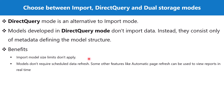Direct Query models also don't require scheduled data refresh. Since data stays at the source, every query hits the source and brings in the latest data, so you are not constrained by the refresh limits of 8 or 48 times per day. There are also certain features like automatic page refresh in Power BI and Power BI service, which can be used to view reports in real time — the page refreshes automatically after a configurable number of seconds.